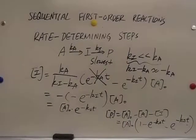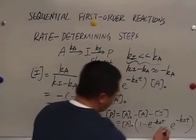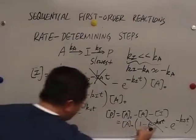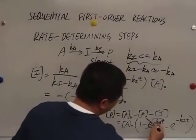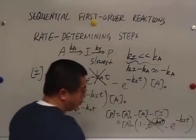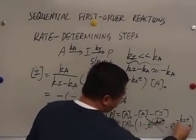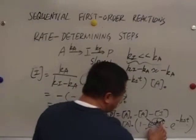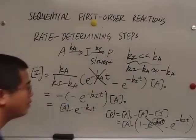If Ki is much smaller than Ka, we can safely neglect this e to the power of negative KiT, because this part is going to be much more negative than this one. We are comparing these two. If this guy is much smaller than this guy, then e to the power of negative KiT is going to be negligible compared to e to the power of negative KaT.